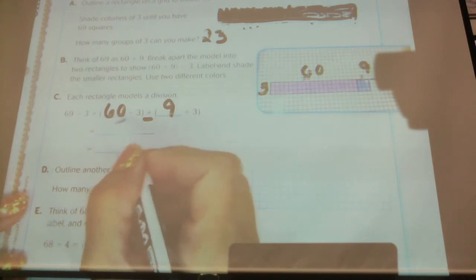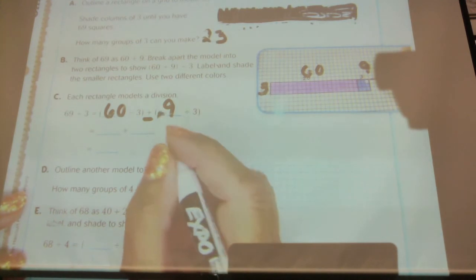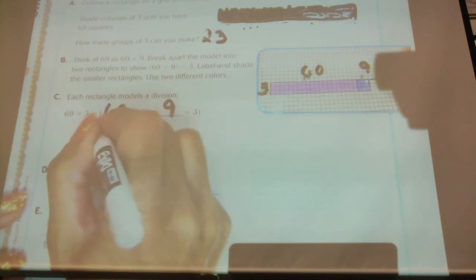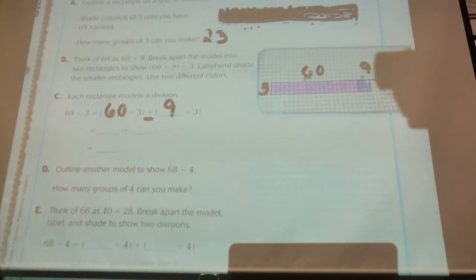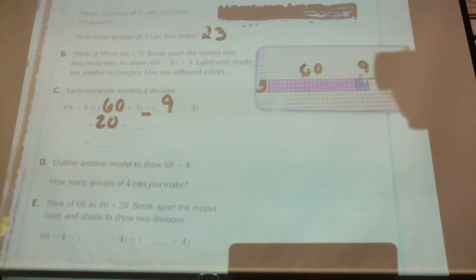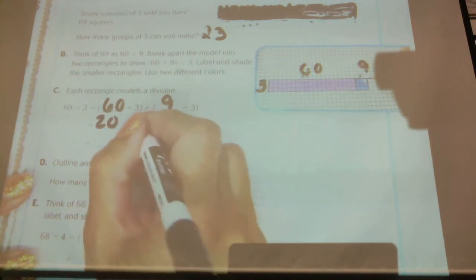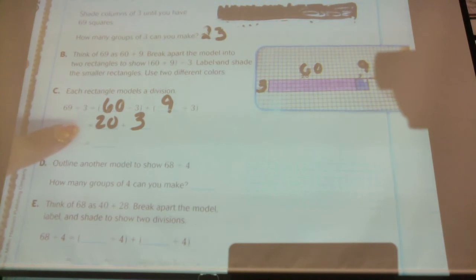So now, is it easier for me to do 60 divided by 3? Yes, it sure is. What is 60 divided by 3? 20. And what is 9 divided by 3? Raise your hand when you know. 3. So I can do 20 plus 3 equals 23.